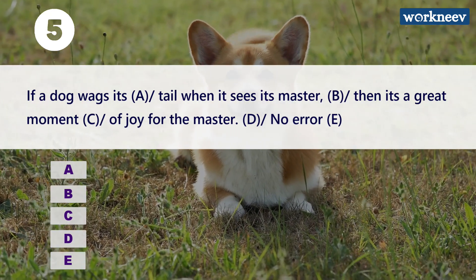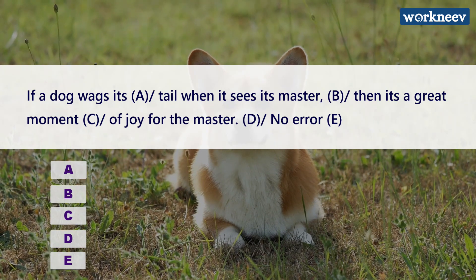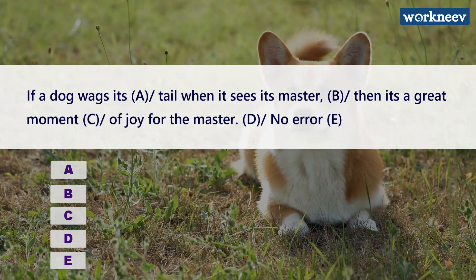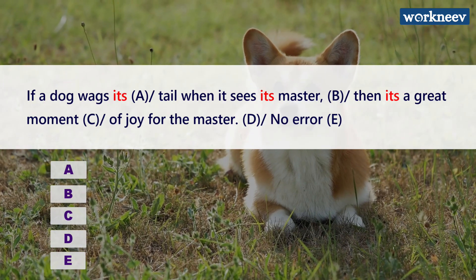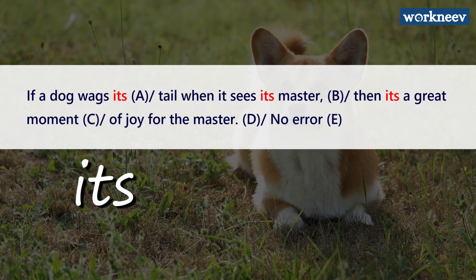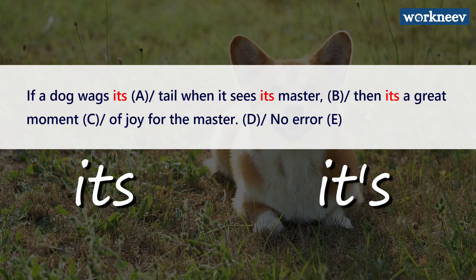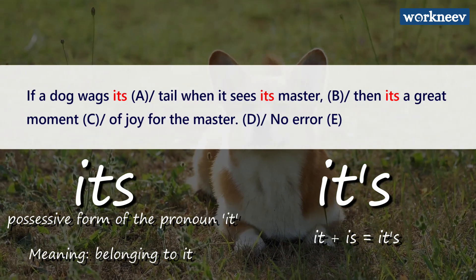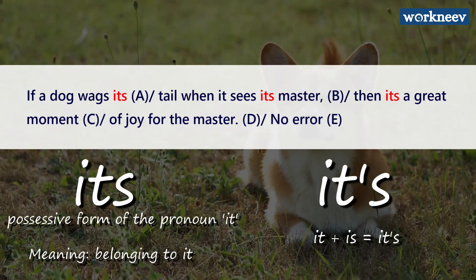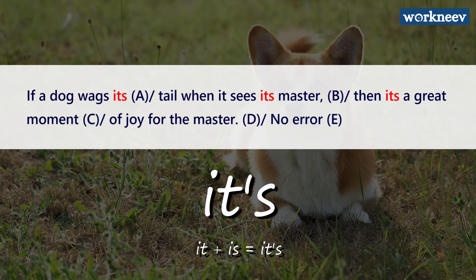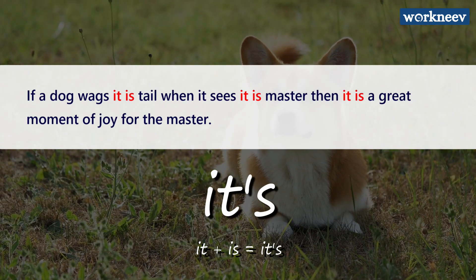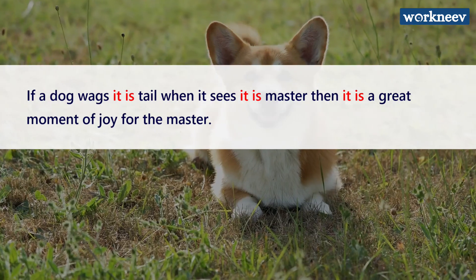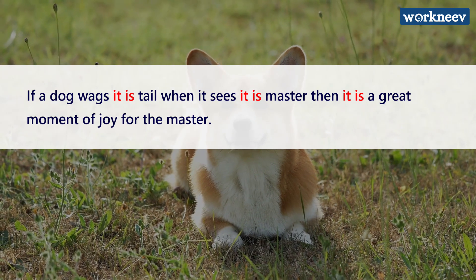The last question is: 'If a dog wags its tail when it sees its master, then it's a great moment of joy for the master.' There are two variations: 'its' is the possessive form of the pronoun 'it,' meaning belonging to it; 'it's' (with apostrophe) is a contraction of 'it is.' To solve this, replace 'it's' with 'it is' and re-read the sentence: 'If a dog wags it is tail when it sees it is master then it is a great moment of joy for the master.' This sounds odd in most places.